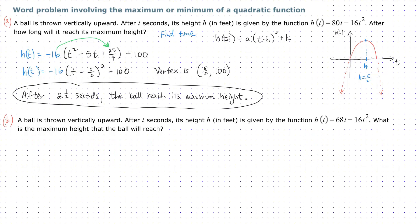Once again, we're going to complete the square. h(t) = -16, and we have t². We need a positive 68, so why don't we try 68 over 16 times t, in parentheses.